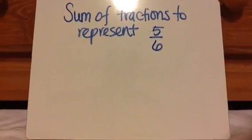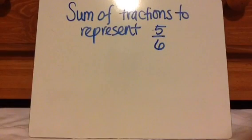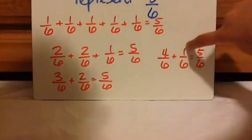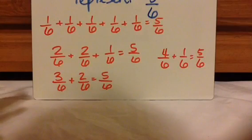It's your turn — show me a sum of fractions representing 5 sixths. Remember there are many different ways, but I also want you to include the unit fraction way. Press pause and then press play when you're ready to check. So here are the different answers: 1 sixth plus 1 sixth plus 1 sixth plus 1 sixth plus 1 sixth; 2 sixths plus 2 sixths plus 1 sixth; 3 sixths plus 2 sixths; 4 sixths plus 1 sixth. You can also write 1 sixth plus 4 sixths — they can be in any order.